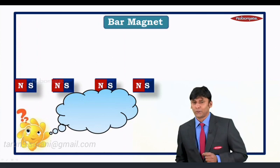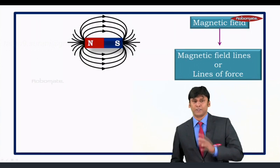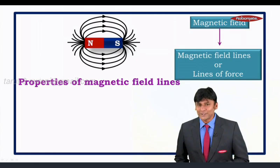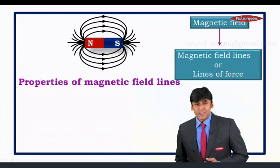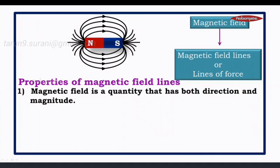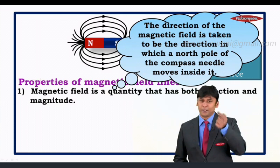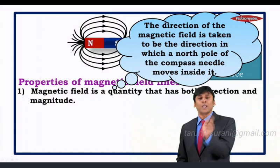To understand why a magnet is always a dipole, we note that a magnet is surrounded by a magnetic field, also called lines of force. The first property of magnetic field lines: magnetic field is a quantity that has both direction and magnitude. The direction of the magnetic field is taken to be the direction in which the north pole of a compass needle moves inside it.